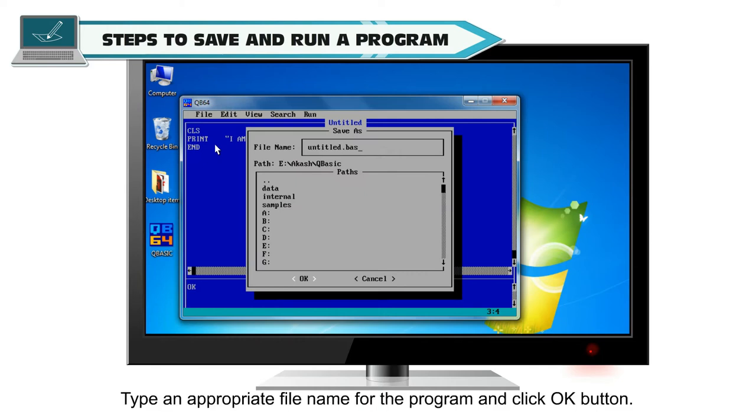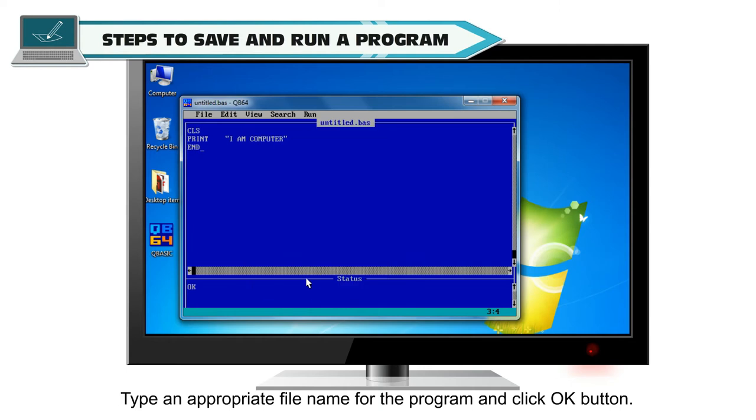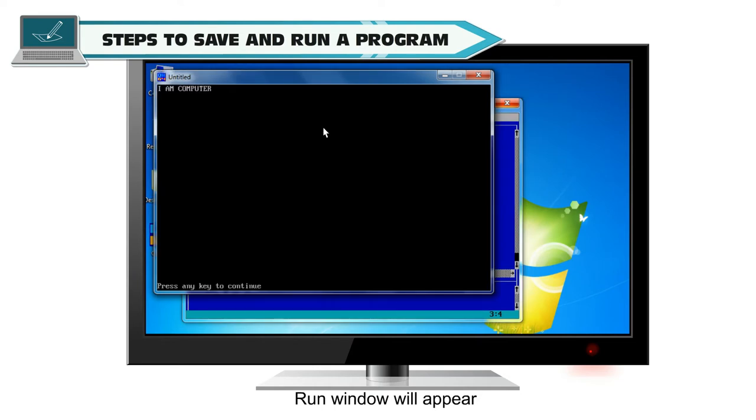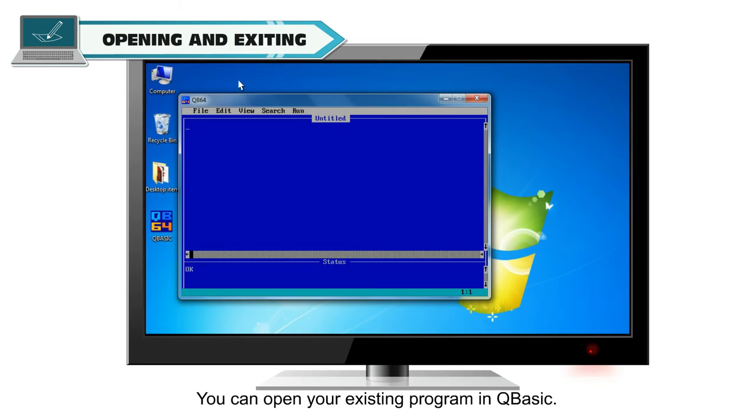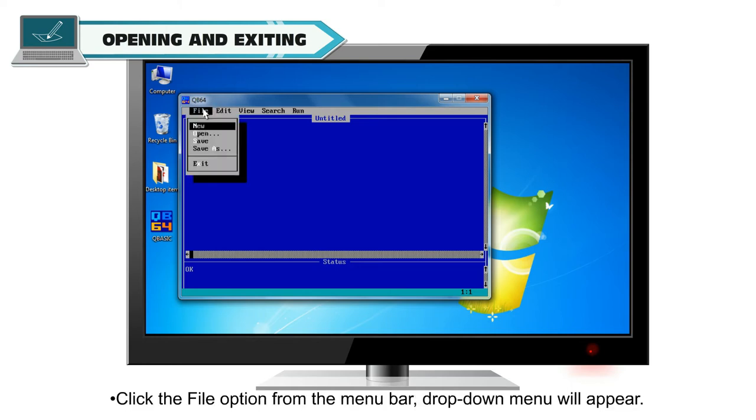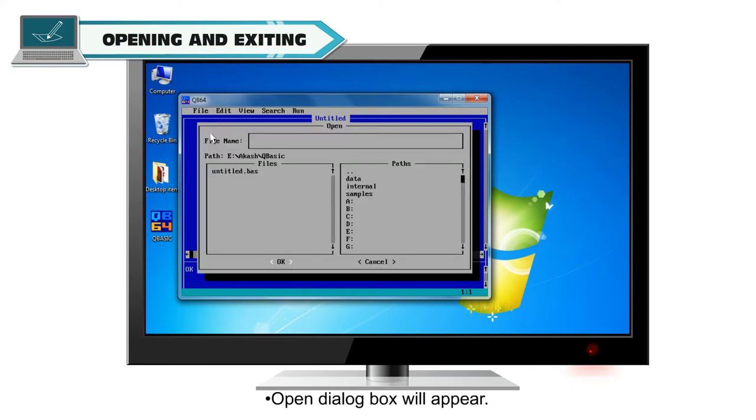Type an appropriate file name for the program and click OK button. Click on Run menu and select Start option. Run window will appear. Opening and Exiting: You can open your existing program in QBASIC. Steps to open program are: Click the File option from the Menu Bar. Dropdown Menu will appear. Select Open option to open your existing program. Open Dialog box will appear. Search and select your file name and click Open button.